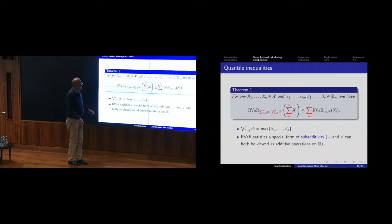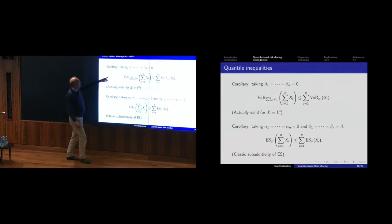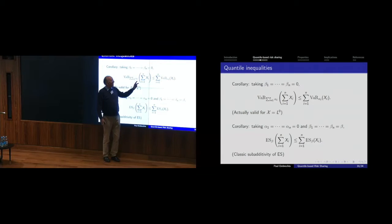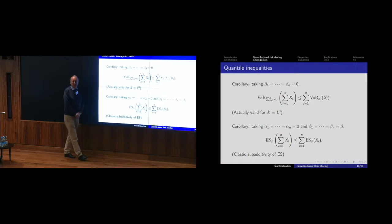The proof is not entirely trivial — it's not something you immediately see; you have to work on it. As a boundary consequence: if all betas are zero, the VaR of the sum at the sum of small alphas is bounded by the sum of individual VaRs. For Expected Shortfall, setting all alphas to zero gives the standard sub-additivity property. There is a paper on my website with seven proofs of sub-additivity of Expected Shortfall — every proof has an interesting mathematical twist and pedagogical reasons depending on the audience.